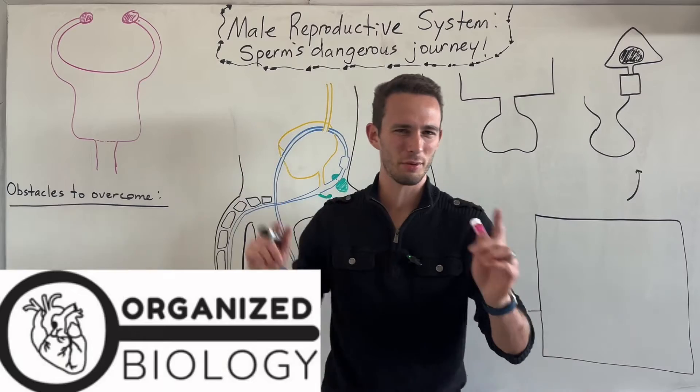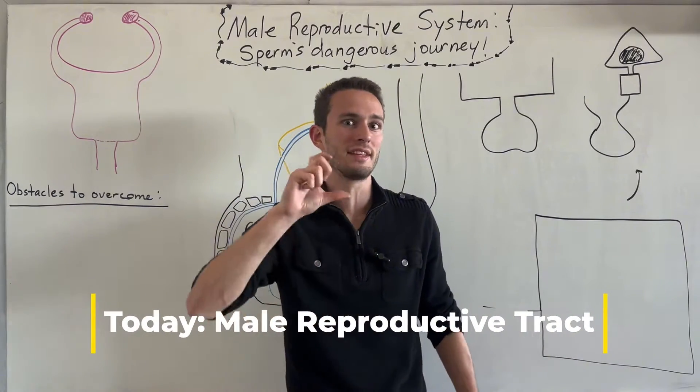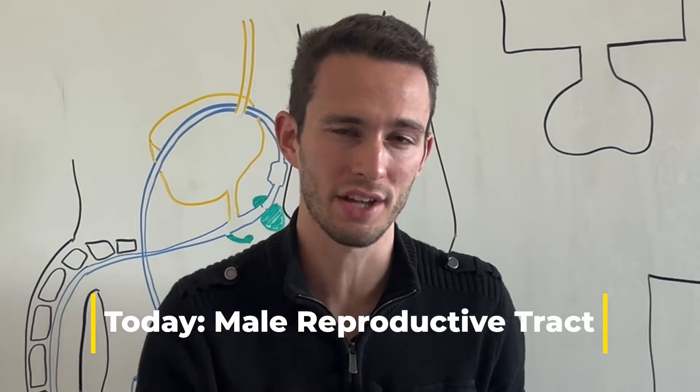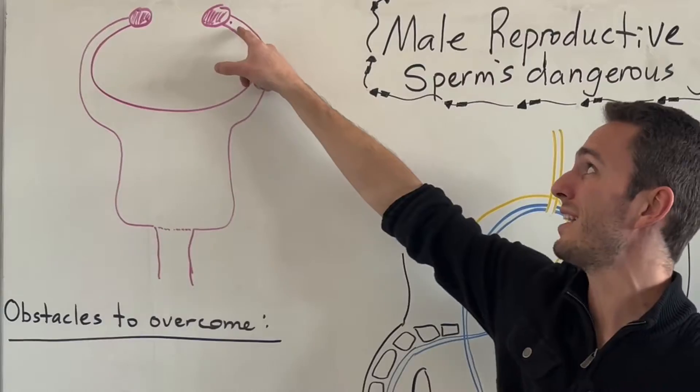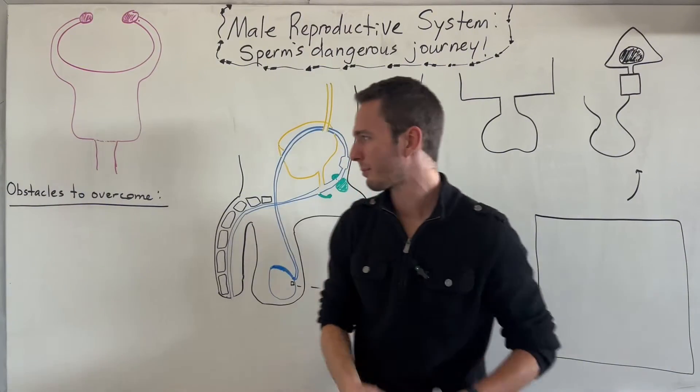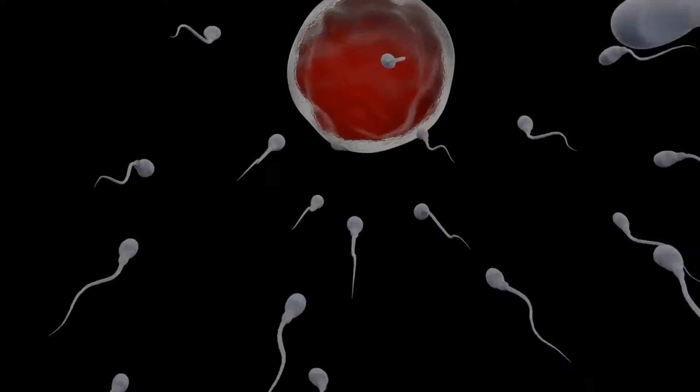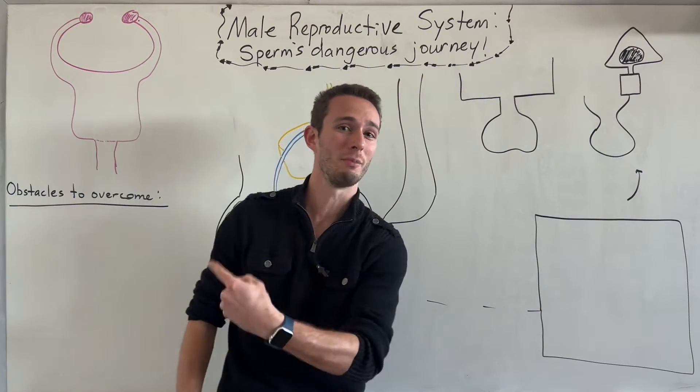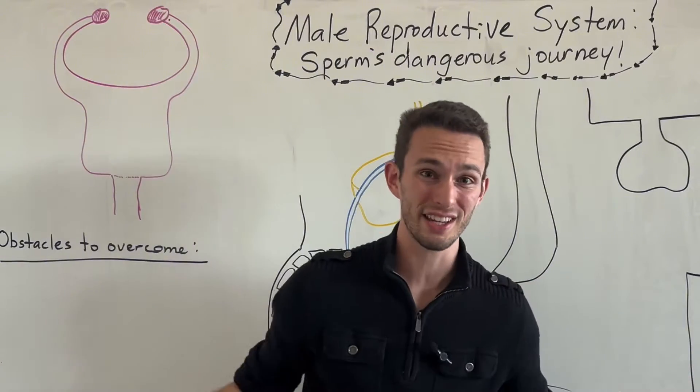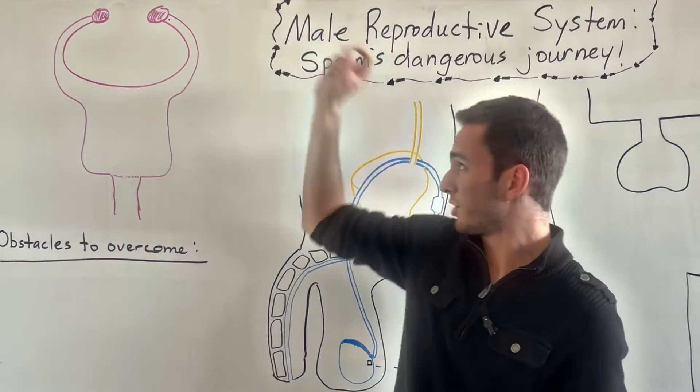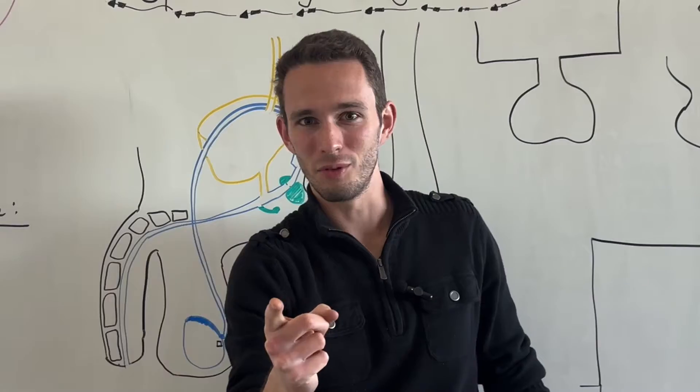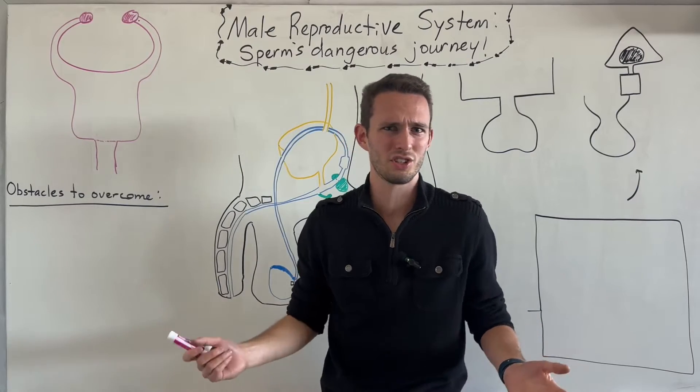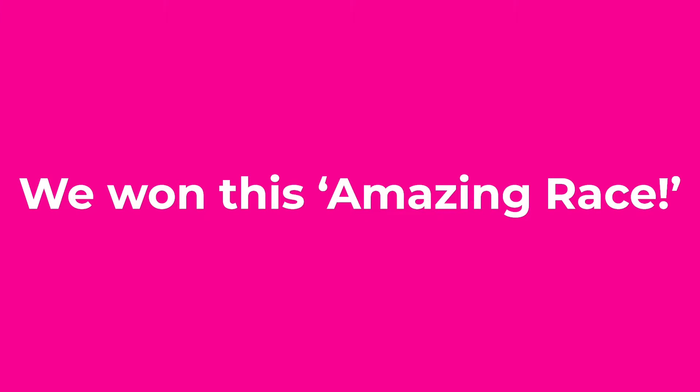You think your life is hard? Sperm has it so much harder than you. Hey everybody, Organized Biology here. Today we're talking about the male reproductive tract, but we're switching it up. We're talking about the dangerous, treacherous journey the sperm has to take in order to fertilize that egg way the heck up there. We're going to talk about all the obstacles the sperm has to overcome in the female reproductive tract in order to even get to the egg.